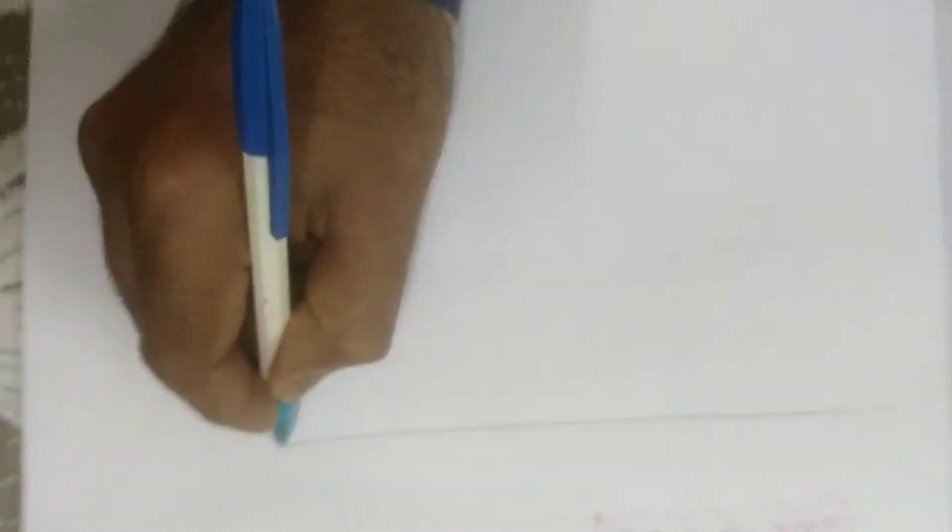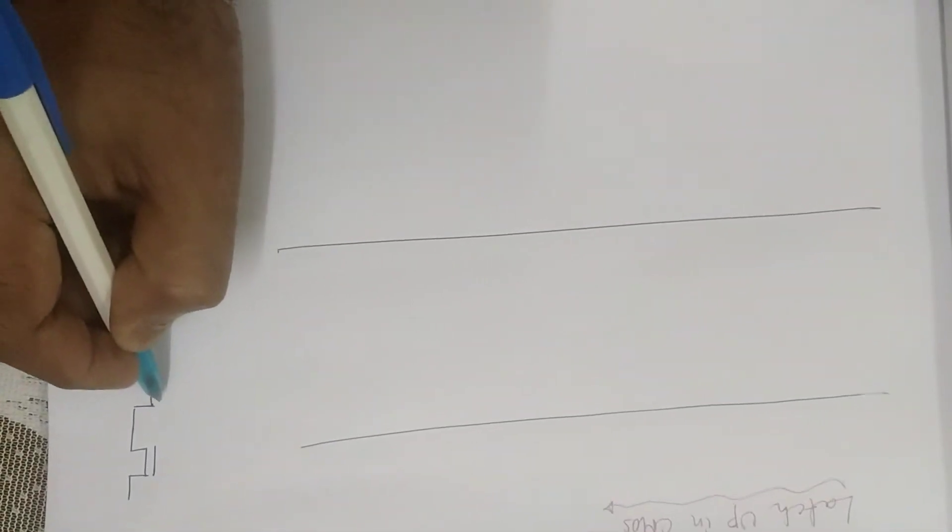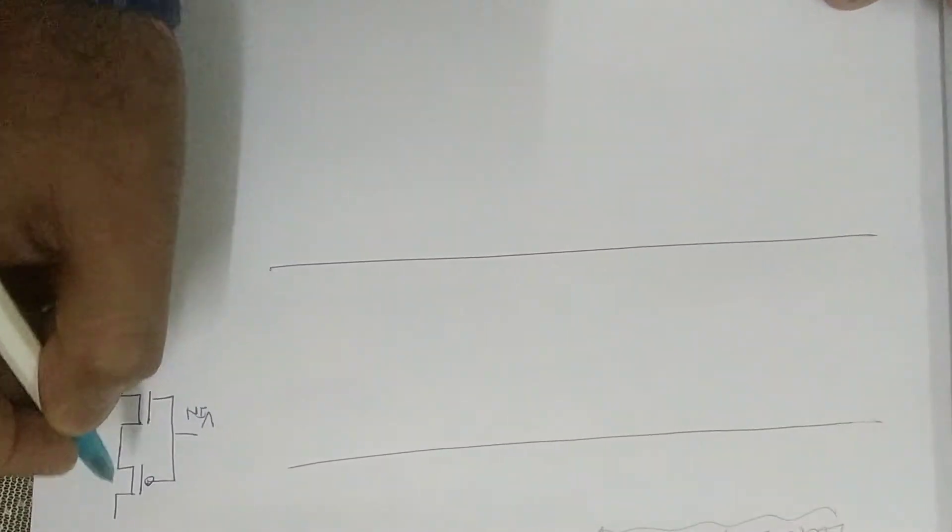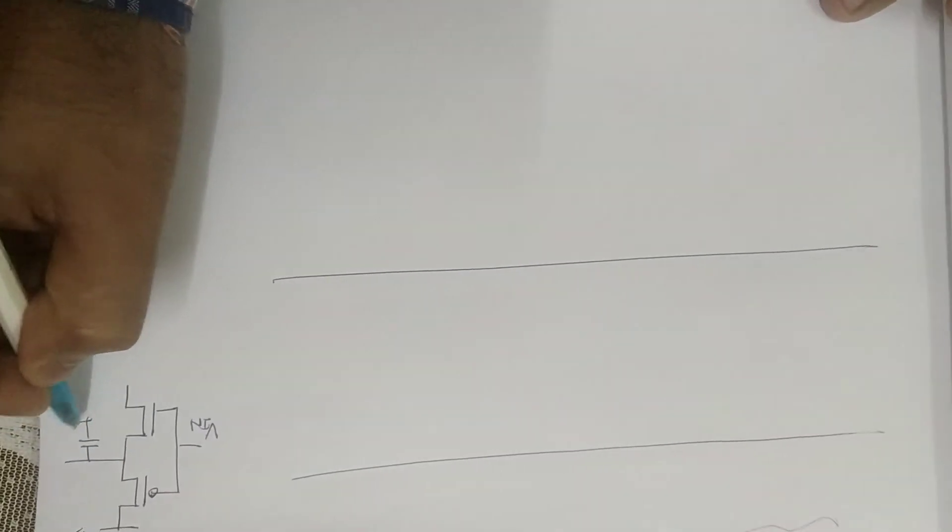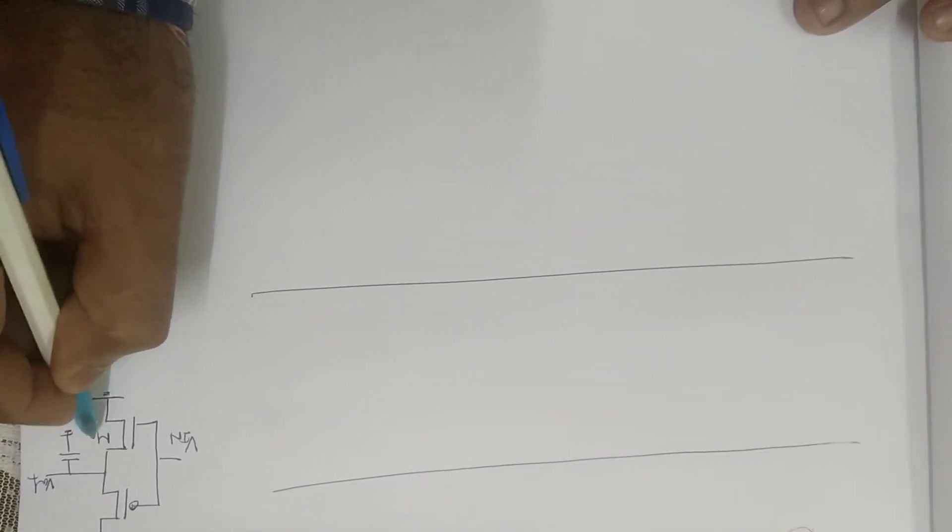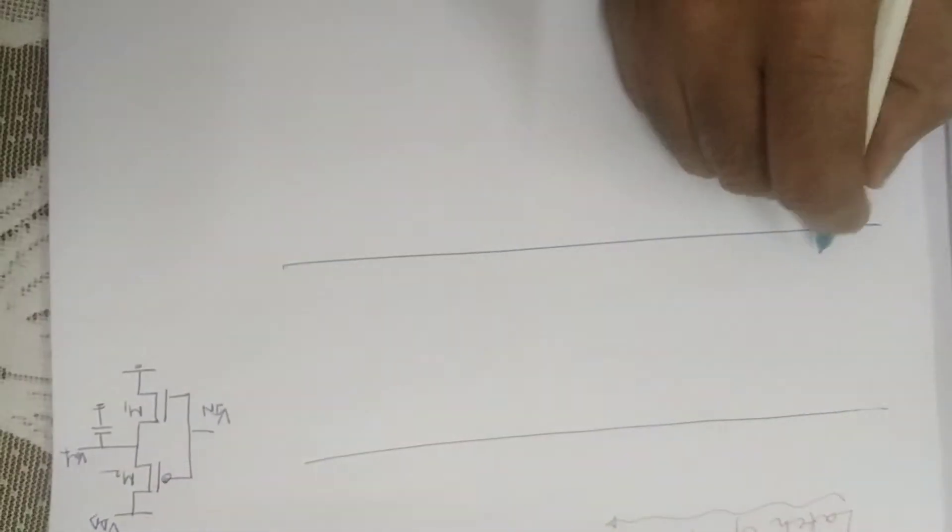As you know, a CMOS inverter has a PMOS with an NMOS. This one is the input and this one is the output and ground. Say this one is M1 transistor, M2 transistor. For NMOS we need a P-type substrate, N plus region and N plus region, and there is a P plus region.